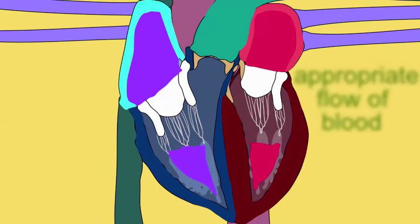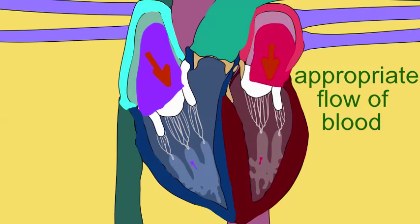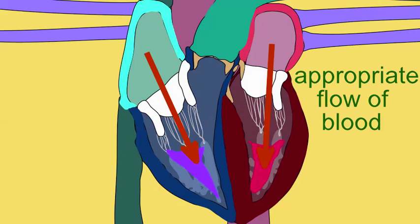During the cardiac cycle, blood is supposed to travel from the atria into the ventricles and then from the ventricles into the vessels which depart from the heart.